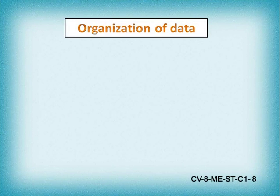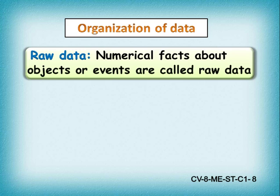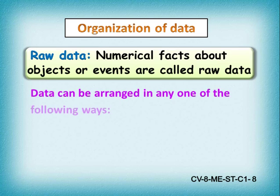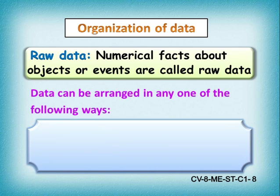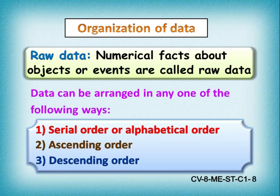Now we shall get into the organization of data. The numerical facts about objects or events are called raw data. Simply collecting information about height, weight, marks, etc. does not give much information as it is; hence, they are to be organized. Data can be organized in the following ways: serial order or alphabetical order, ascending order, and descending order.